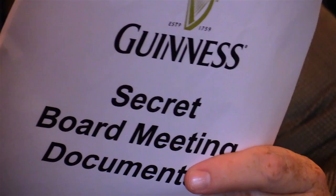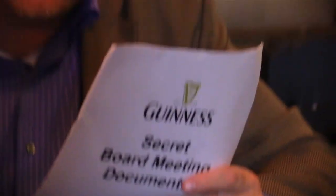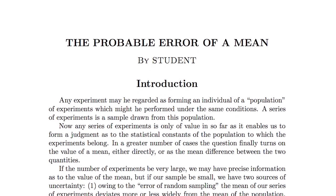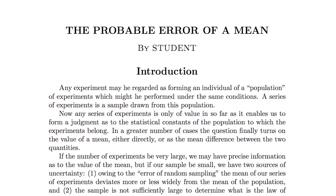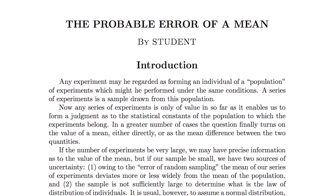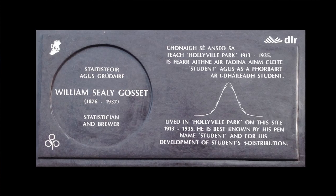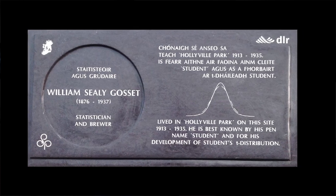But according to the minutes of the Guinness Board, Gossett was granted permission to publish with the stipulation that he used a pseudonym. And so in 1908, William Seeley Gossett published two articles in Carl Pearson's journal Biometrica under the pseudonym Student. And today we still use Student's T table whenever we do a T test.